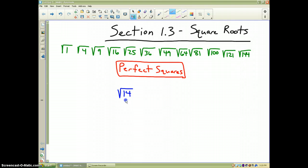Now, when you estimate the square root of 14, the first thing you do is you look at your list of perfect squares and you figure out where does it lie. Well, the square root of 14 lies right between the square root of 9 and the square root of 16.